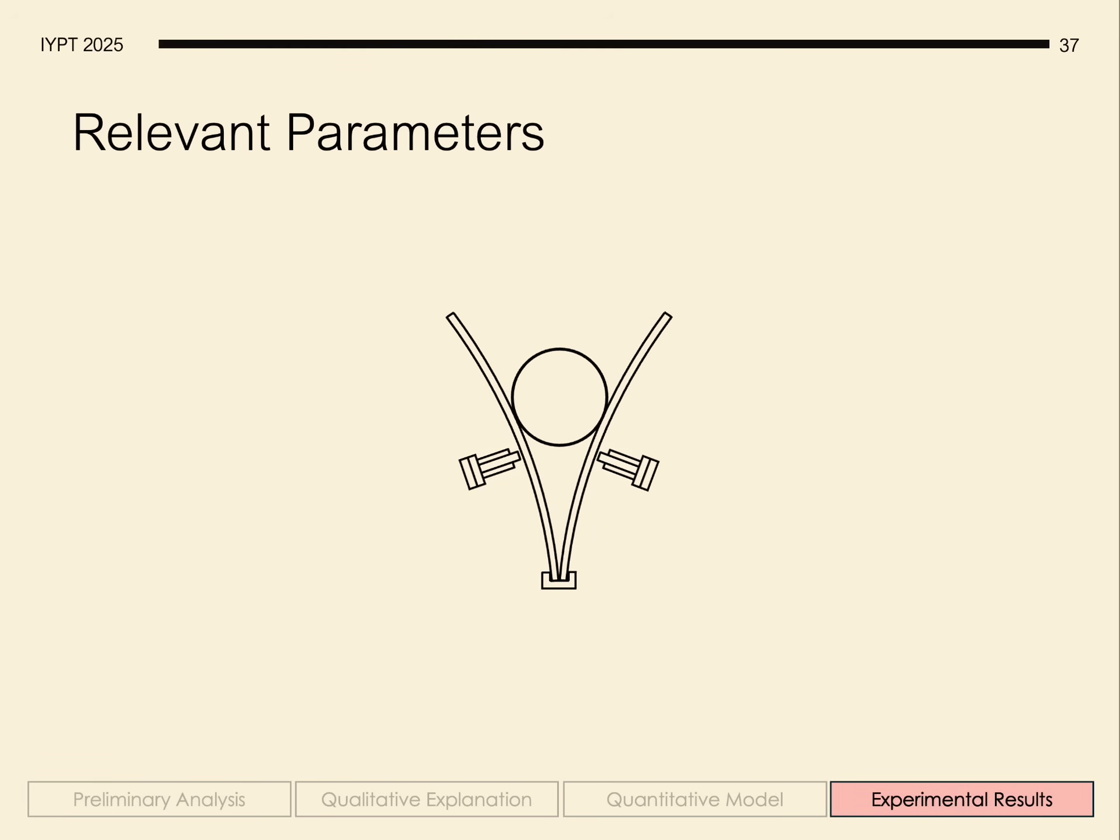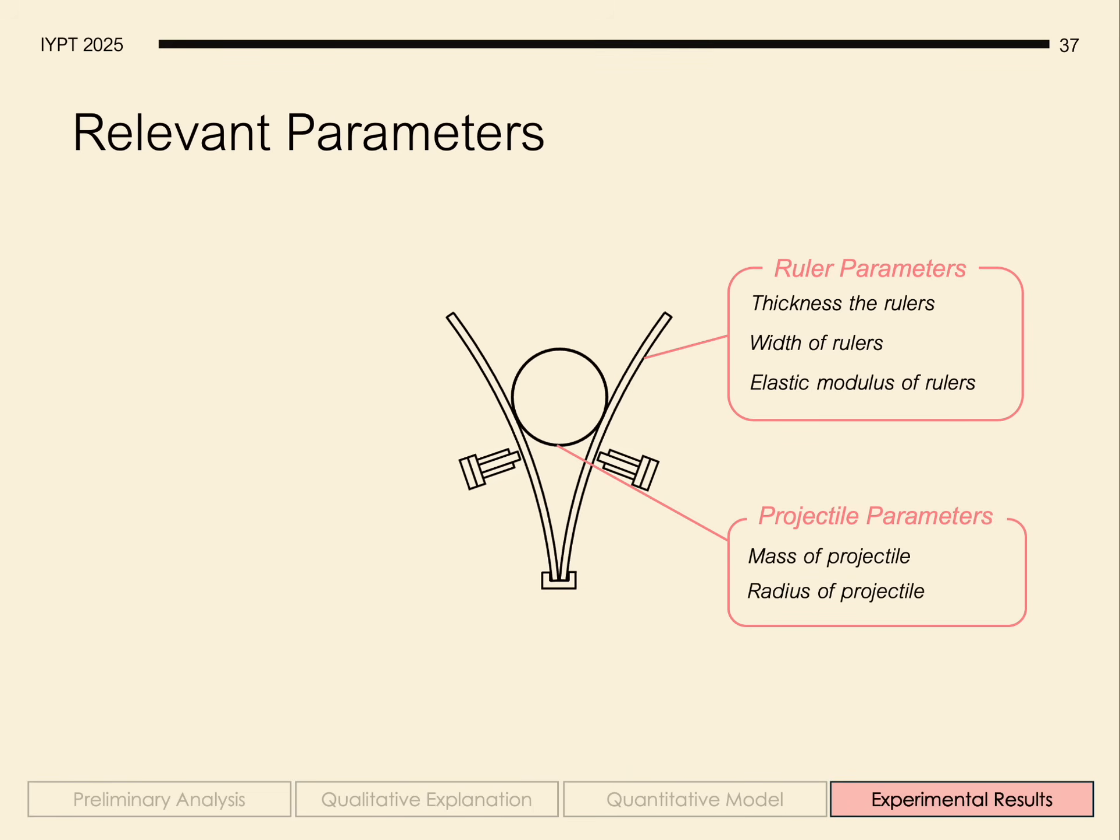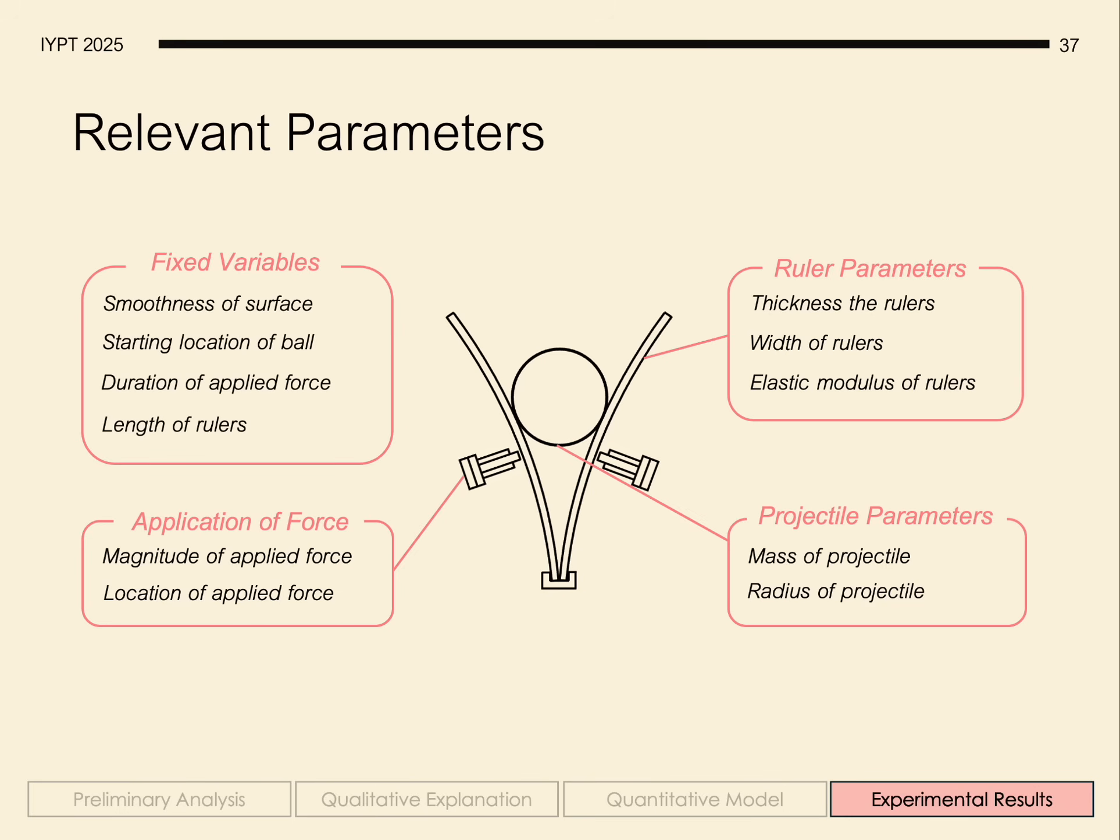We varied the ruler's thickness, width and elastic modulus, the projectile's mass and radius, the force's magnitude and location, and we kept some variables constant, namely the smoothness of the surface top, the ball's starting location, the duration of applied force, and the length of rulers.